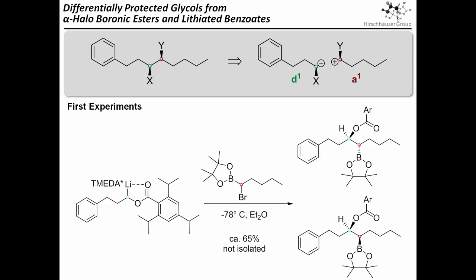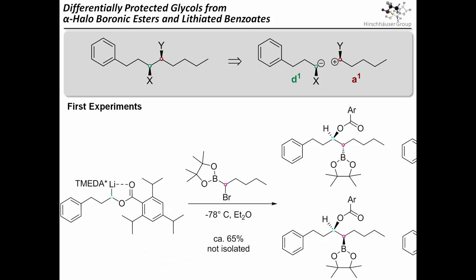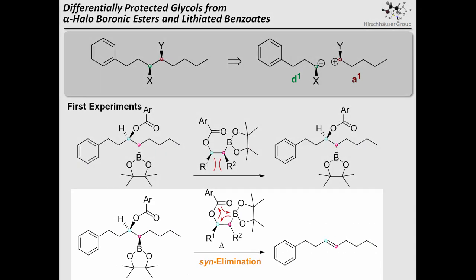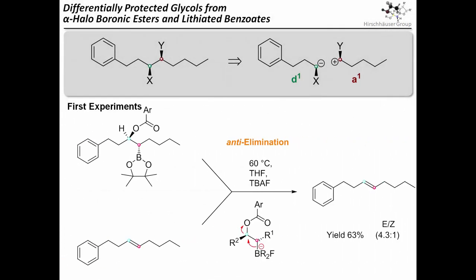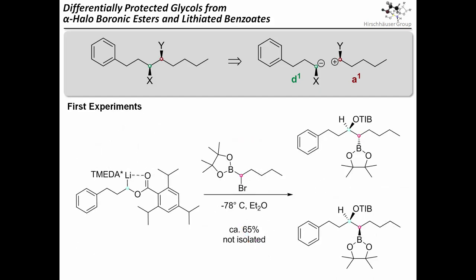Actually, you can do some nice chemistry with those products, as heating initiates syn-elimination of the threo isomer while leaving the sterically hindered erythro isomer intact. Afterwards, the latter can be persuaded to undergo anti-elimination after addition of fluoride, so that both diastereomers give you the same alkene. While all of that is quite nifty, let's be honest, it won't replace the Wittig reaction.